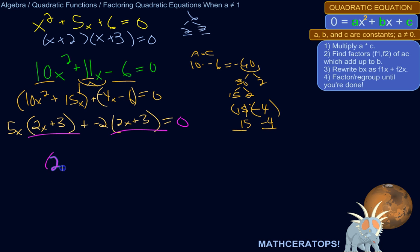So we've got 2x plus 3 times, now what's left is 5x and a minus 2. 5x minus 2. In other words, if I were now to foil this, I'd get 2x times 5x is 10x squared. 2x times minus 2 is negative 4x. 3 times 5x is 15x. 3 times negative 2 is negative 6. So each one of those is equal. So this factor times this factor is equal to 0.